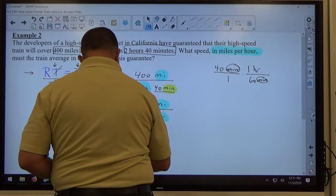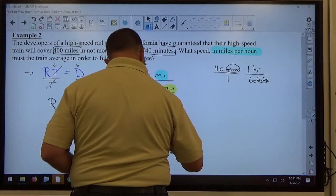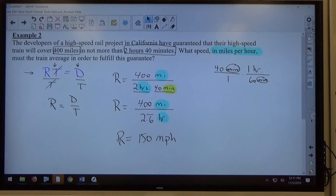So, the rate of this train has to be 150 miles per hour to get exactly the amount of time it takes, right? They're guaranteeing it takes no more than 2 hours and 40 minutes, right? So, it could be less than 2 hours and 40 minutes, right?